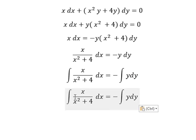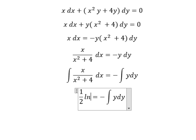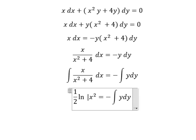So the integration of this one we have one over two ln of the absolute value of x squared plus 4.